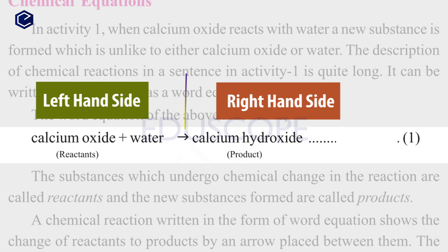When writing a chemical equation, if we write the names of chemical compounds in words, we call it a word equation.